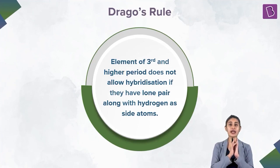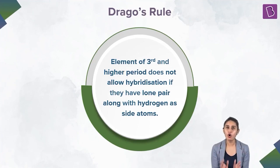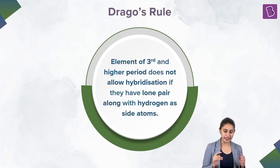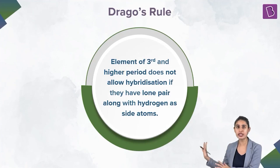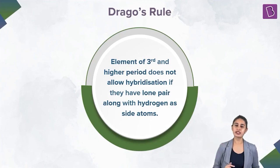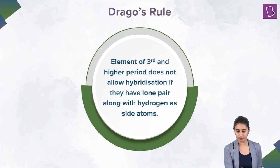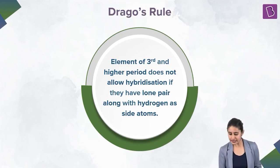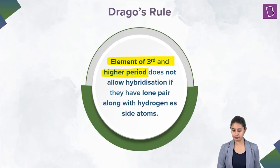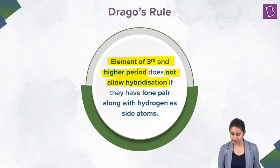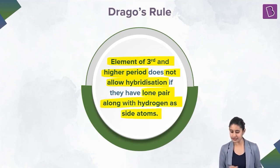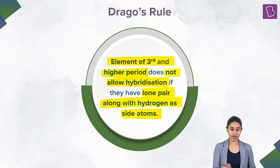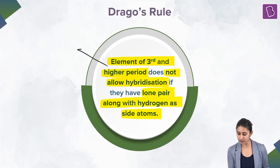A student says they are understanding nothing at all. The teacher responds: let me help you out. Let's rewrite this rule one by one. It says elements of the third and higher period do not allow hybridization if they have a lone pair along with hydrogen as the side atom. Let's break it into three parts.